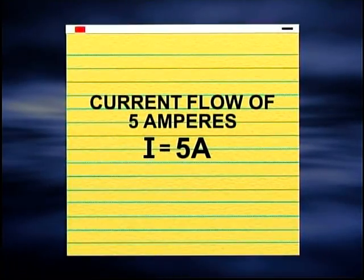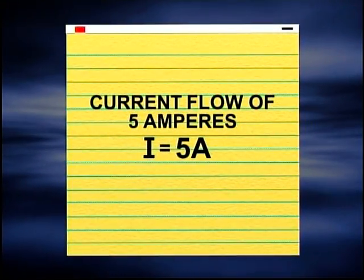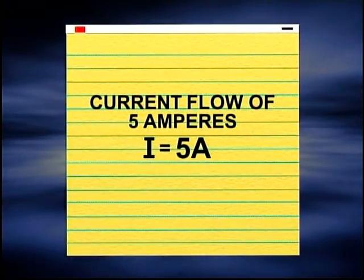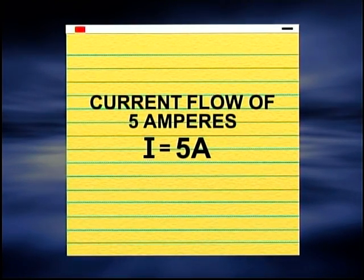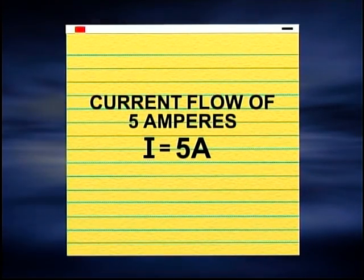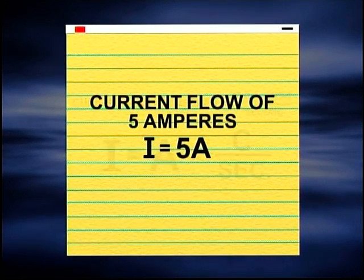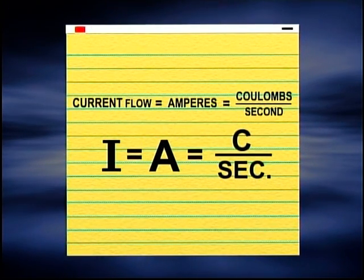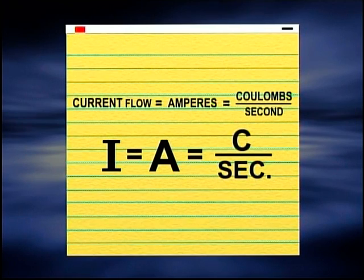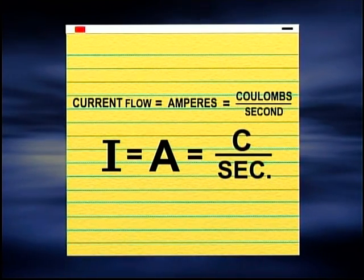Symbols are another shortcut used to identify what's being measured. For example, electrical current is shown by the symbol I. Therefore, a current flow of 5 amperes would be written as I equals 5A. So, using the symbols, I equals A equals C per second.